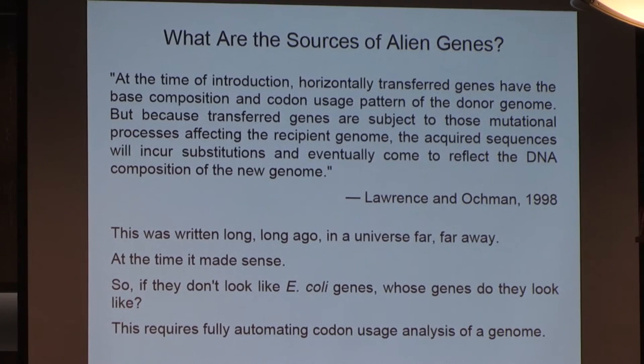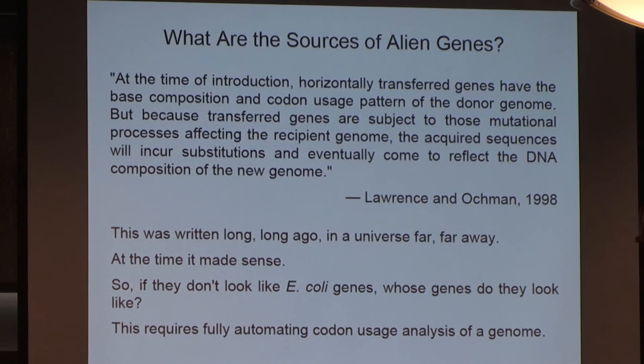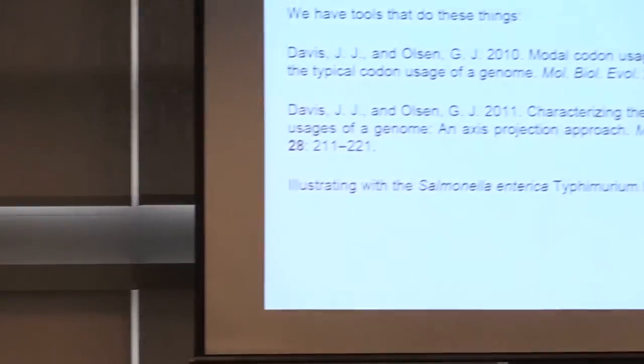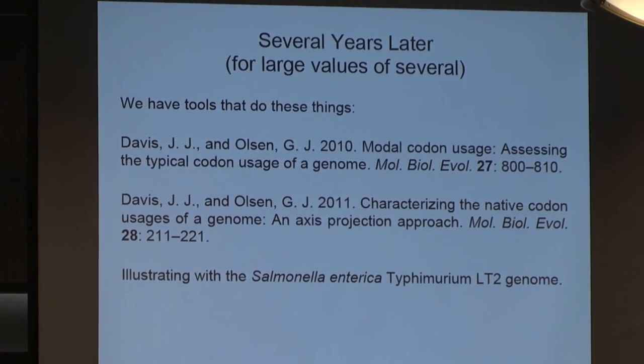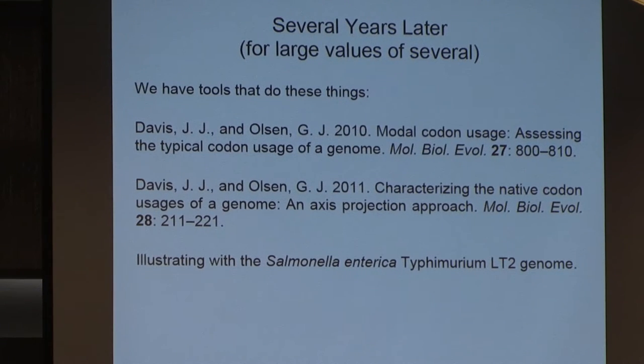Our question was: if they don't look like E. coli genes but look like their donor, who do they look like? Who is the donor? Basically what we need is a database of all the codon usages out there in nature. Then we can go back to these alien genes in E. coli and ask who they look like and where they come from. From formulating the question to having running software was slow at first — maybe five to ten years.